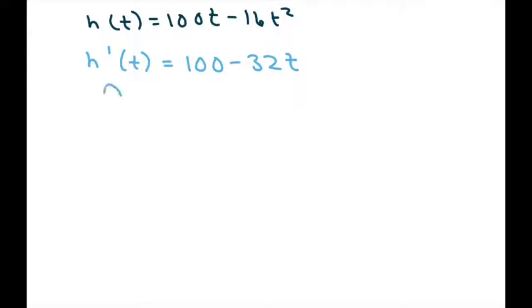Next, we set the derivative to zero and solve for t. So what I can do is write this out: 0 = 100 - 32t, which means 32t = 100, so t = 100/32.